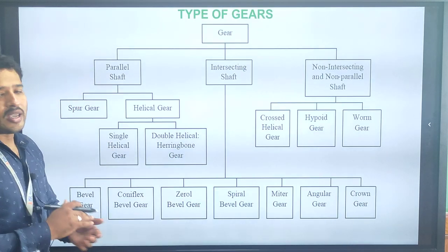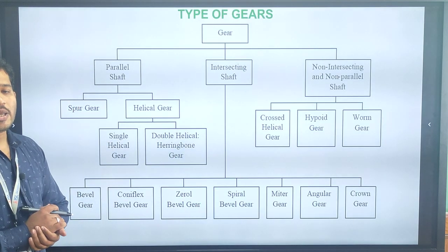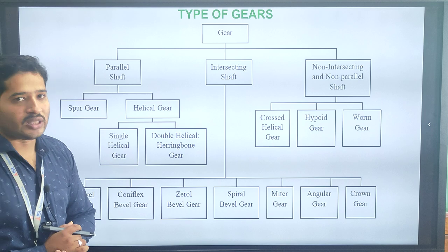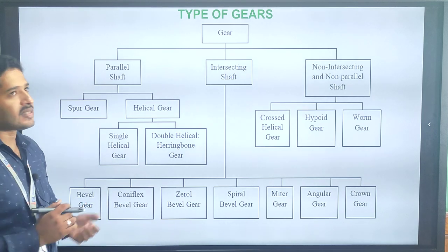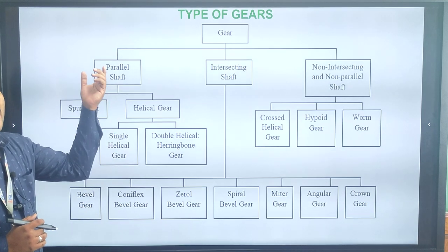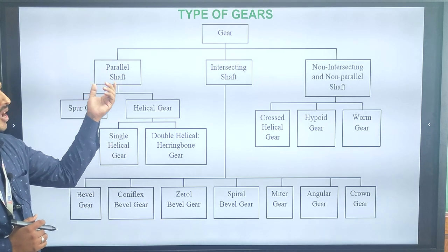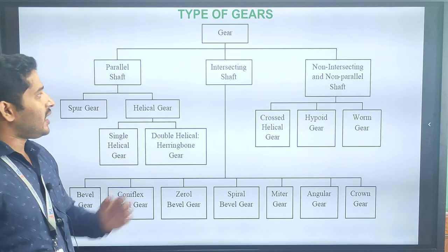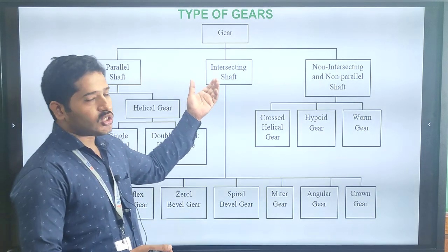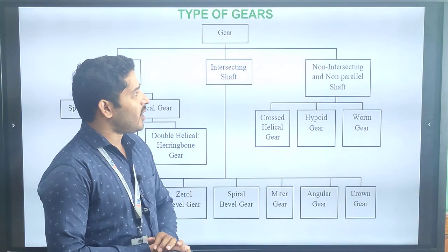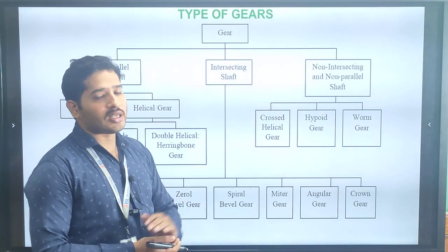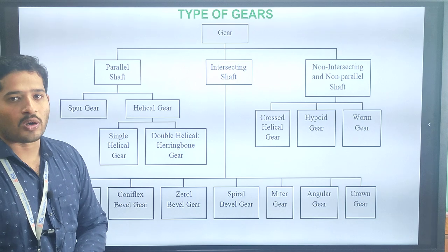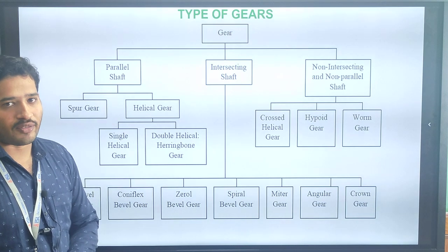Gears are broadly classified into three types. The first one is parallel shaft gear, another one is intersecting shaft gear, and the third one is non-intersecting and non-parallel shaft gear.